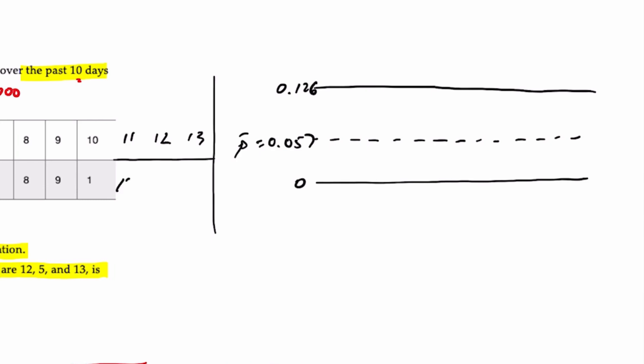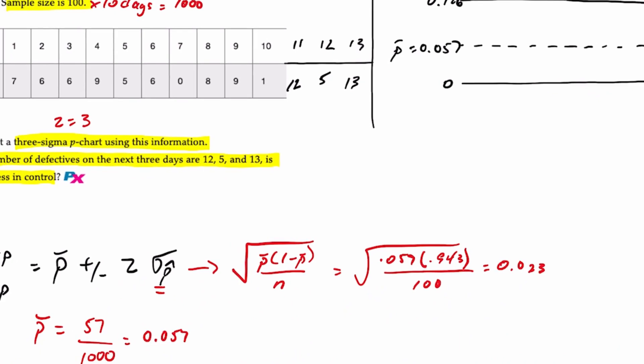We then have three additional days of data, day 11, 12, and 13. And we're told that day 11 has 12 defectives, 5, and also 13. So what we want to do is plot all of these and determine if we're in control. Now, because our control chart, in essence, is in percentages,